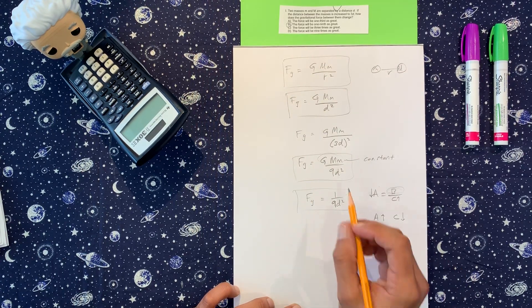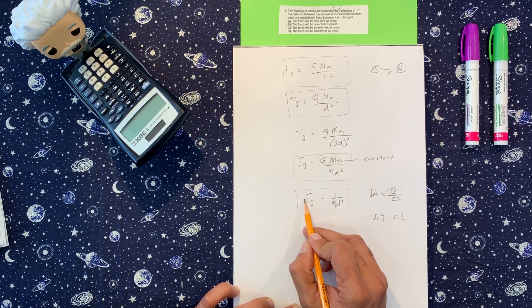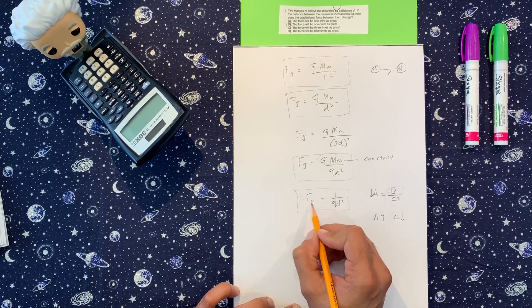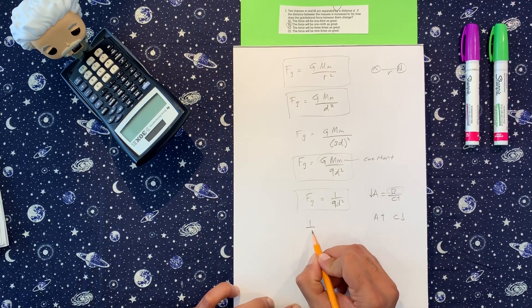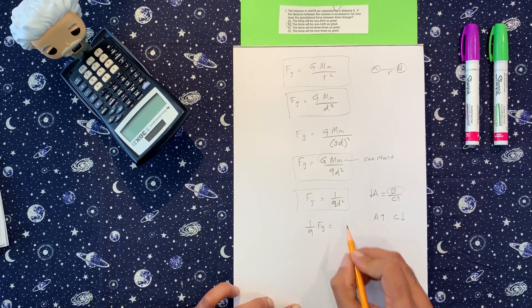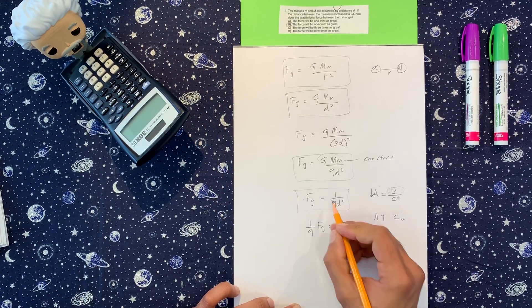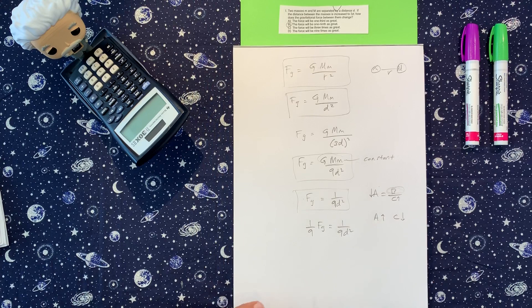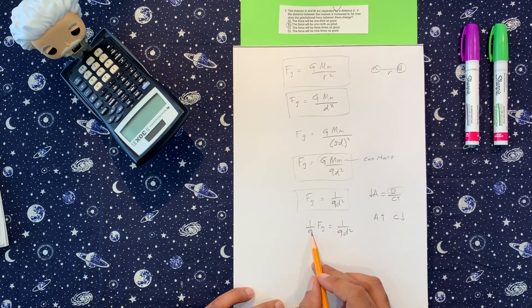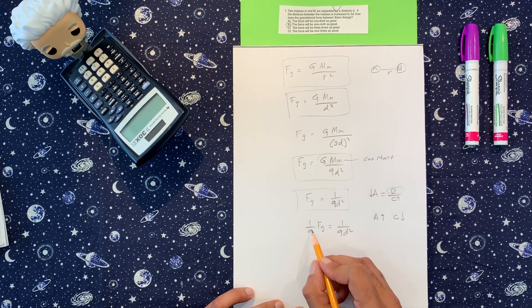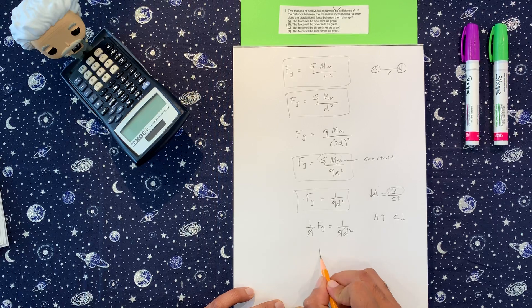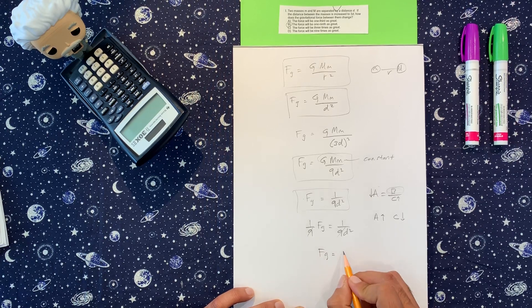And so to make it equal to this side, I have to put a 1/9th on this side. So I'm going to put 1/9th F_G. And this is the same 1/9th that I had here. Now they're both equal because if I put this 9 up here, both of these 9s cancel out and I'll have the same thing I had before.